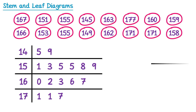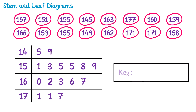Finally to complete this diagram we add the key. I'll pick the smallest number again, 145, which is 14 for the stem, then a vertical line, then 5 for the leaf, and this represents 145 cm.